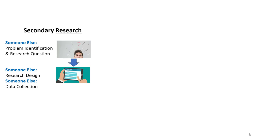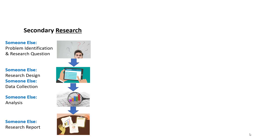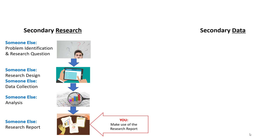Even though the terms secondary research and secondary data are often interchangeable, let's make a formal distinction. When we talk about secondary research in a strict sense, somebody else — not us — identified a problem and a research question. That same person designed a research study, collected data, conducted analysis, and generated a research report. We then, as part of our own ongoing research project, made use of that report — perhaps one of their insights, one of their tables, or a relevant statistical value.